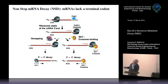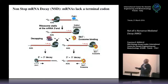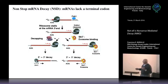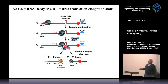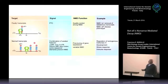A little bit more detail on non-stop decay: you have the stalled ribosome, SKI-7, the exosome, and eventually degradation from both ends. This is the no-go decay. And here you have an example of endonuclease-mediated degradation. And finally, you have the NMD that we saw before.